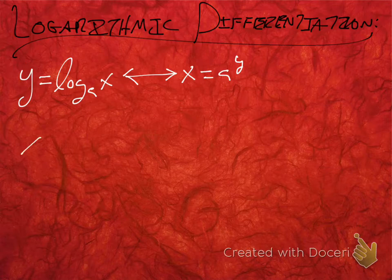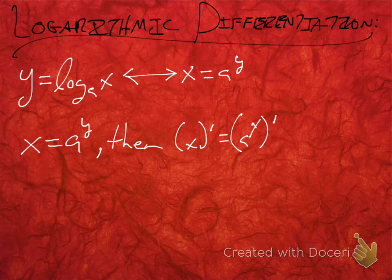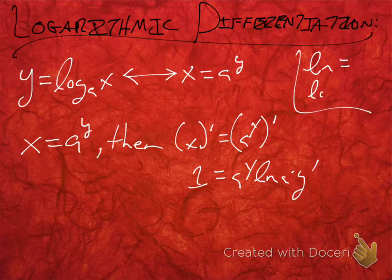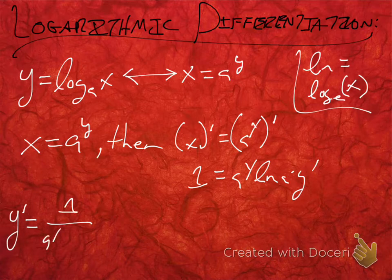From this we can infer that if x equals a to the y, then x prime, using implicit differentiation, is just going to be a to the y times y prime. We use this as an equation — x prime is 1 because we're doing this implicitly and not differentiating with respect to x. So 1 equals a to the y times ln a times y prime. This means that y prime equals 1 over a to the y times ln a.